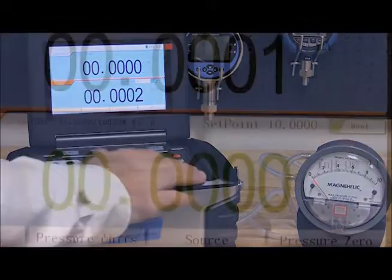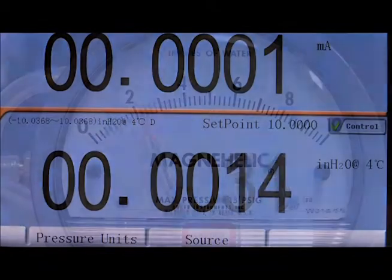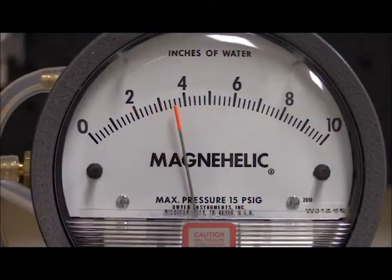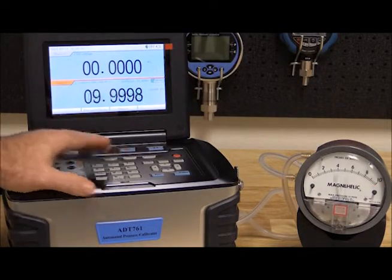To exercise the gauge, simply enter the full scale pressure and press enter. The 761 will supply pressure through a built-in pump and control to the full scale. To decrease the pressure, simply press vent.